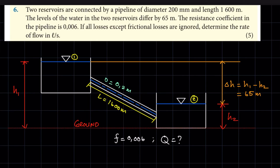Hello everyone, Kotungwane, the native god here. In this video we are going to look at a problem based on the use of Darcy's formula. Now as you see, we are going to be looking at the case where we have two reservoirs connected with a pipeline. I've taken the liberty of drawing the diagram based on the question we're about to do, and the question is as follows.